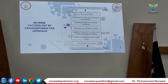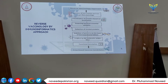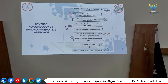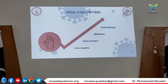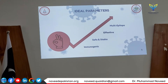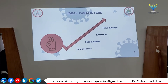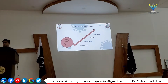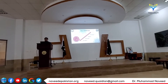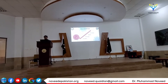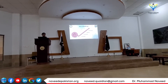There are two different approaches for vaccine design: one is the direct approach, and the other one is reverse vaccinology, based on the MHC virus. The key parameters that most industries focus on when producing different kinds of vaccines are that the vaccine must be multi-epitope, effective, safe, stable, and immunogenic.